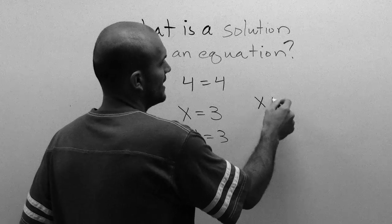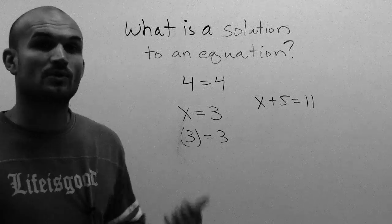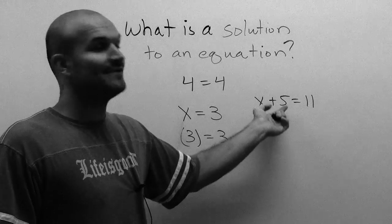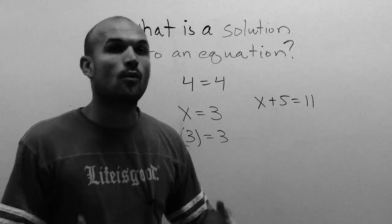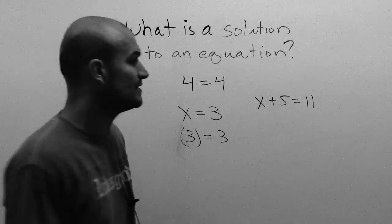Let's say I have x plus 5 equals 11. So what that means is my solution to this equation, when I add 5 to it, I get 11. So what is that number that's going to make that true? What number plus 5 will give me 11?